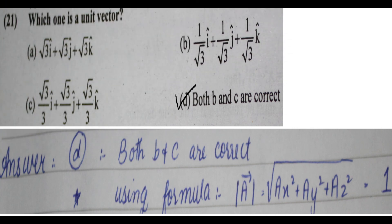Next question: which one is a unit vector? Option D is correct — both B and C are correct. Option B states (1/√3)i + (1/√3)j + (1/√3)k, and option C states the same thing written as (√3/3) for each component. The magnitude of both equals 1, confirming they are unit vectors. So option D is the right answer.